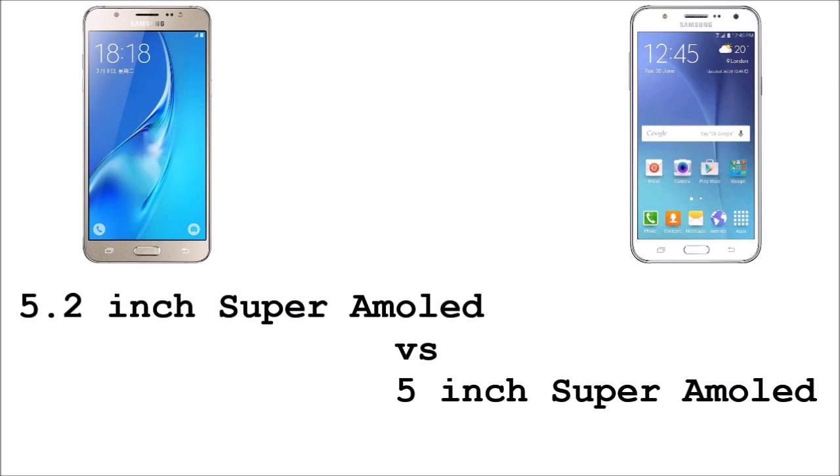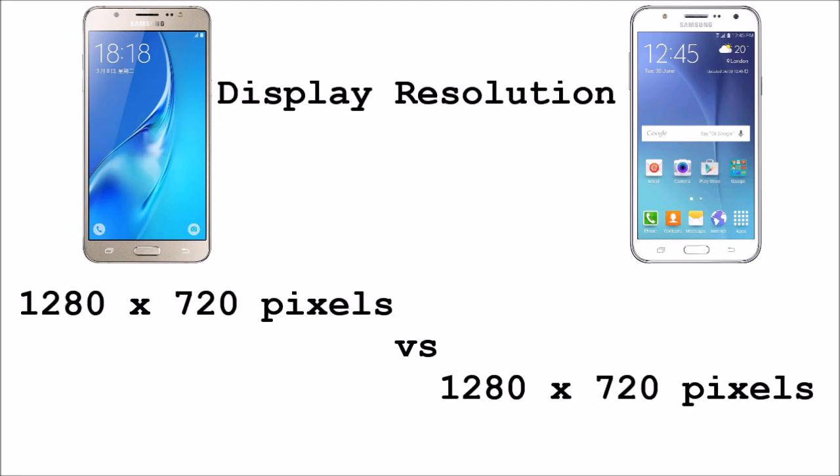Starting off with the display, the J5 2016 got a 5.2 inch Super AMOLED display while the J5 2015 got a 5 inch Super AMOLED display. As for the resolution, both handsets got 1280x720p screens.